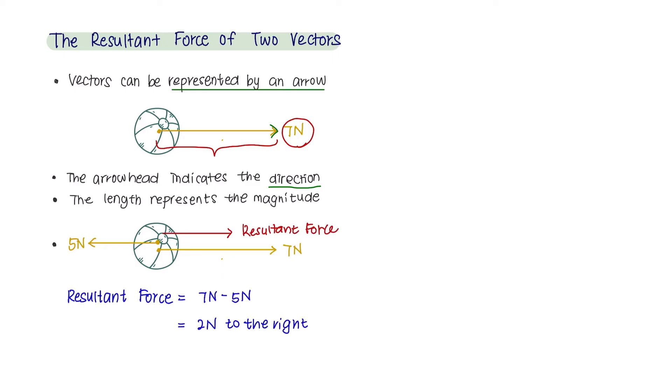The resultant force here is 2 newtons to the right. However, it gets a little bit more complicated. When forces are applied onto objects like this, the resultant force here will be in the middle. But we need to dive deeper into calculating the magnitude and the direction of the resultant force.